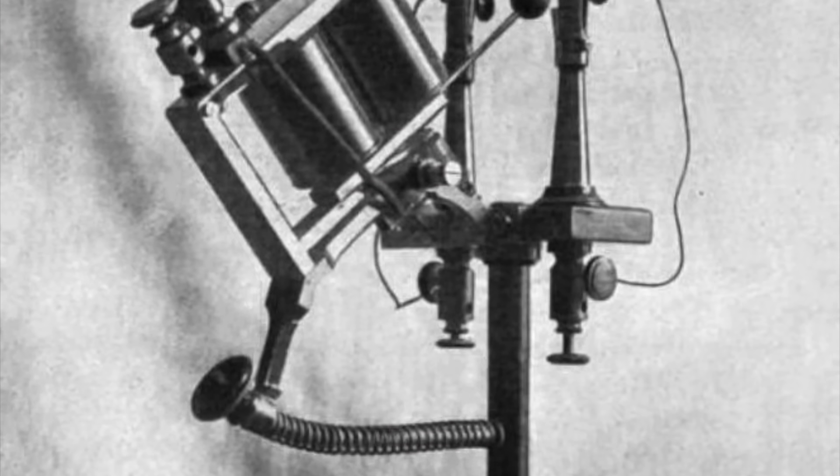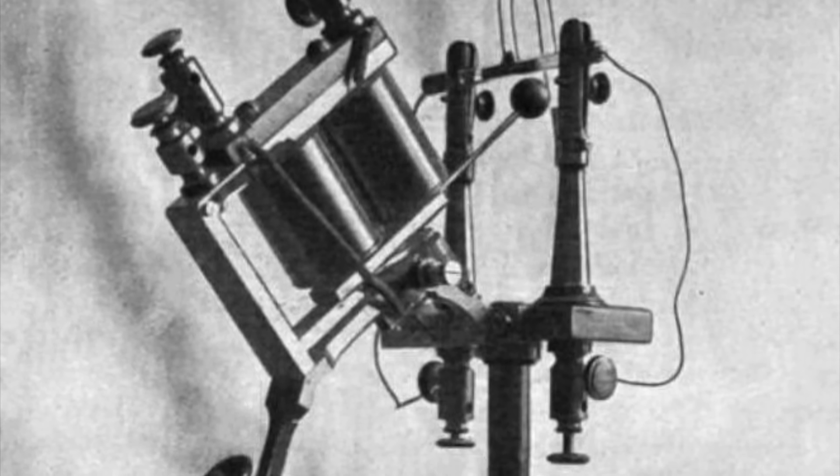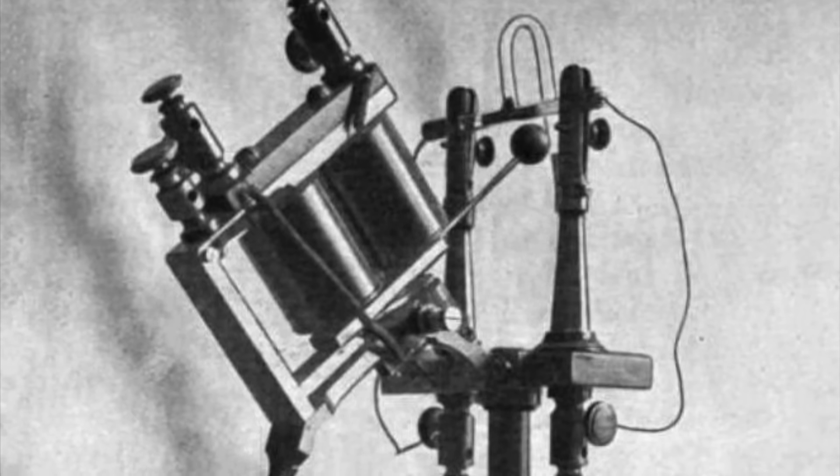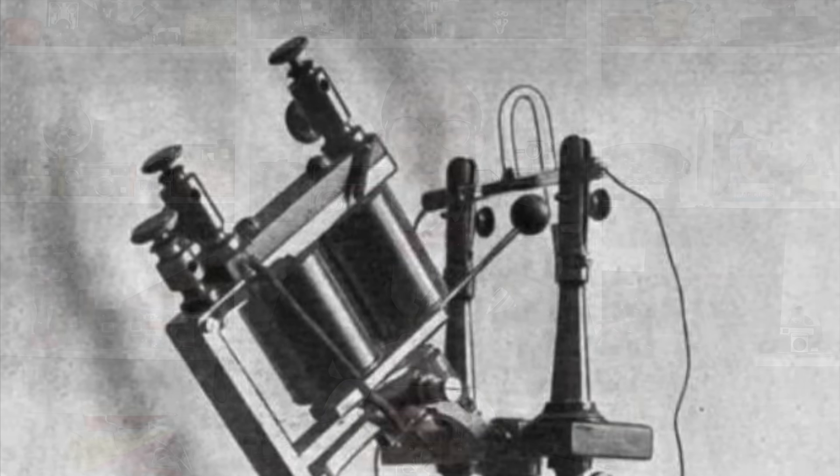So Coherers were fitted with a mechanism called a decoherer, which was an electromagnetic hammer that tapped the Coherer after each signal, resetting the iron filings and allowing the Coherer to receive a new signal. Yet despite being the first practical radio receiver, the Coherer was not very sensitive or reliable.